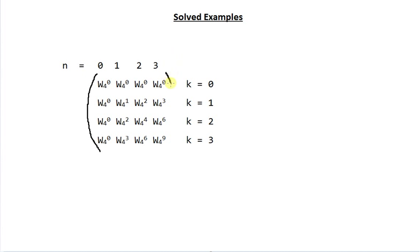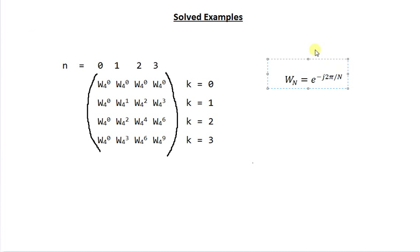This is my matrix containing W_4 raised to n. W_N is defined as e raised to minus j times 2π divided by N. So W_4 raised to zero is e raised to minus j times 2π times 0 divided by 4. W_4 raised to one is e raised to minus j times 2π divided by 4, and W_4 raised to two is e raised to minus j times 2π times 2 divided by 4.